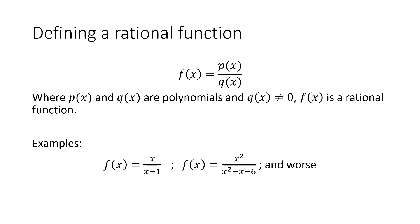Some basic examples of rational functions: f(x) equals x divided by x minus one — that's a polynomial divided by a polynomial. Another one: f(x) equals x squared divided by x squared minus x minus six. That's another simple rational function. They get a lot more complicated than that, but how we deal with them and extract information is the same no matter how complex.